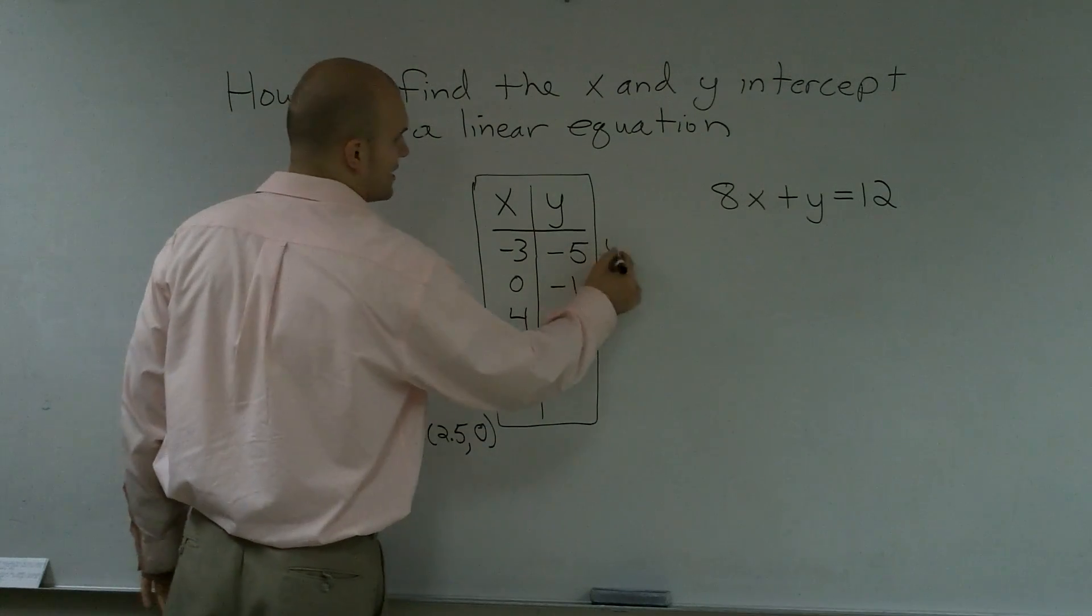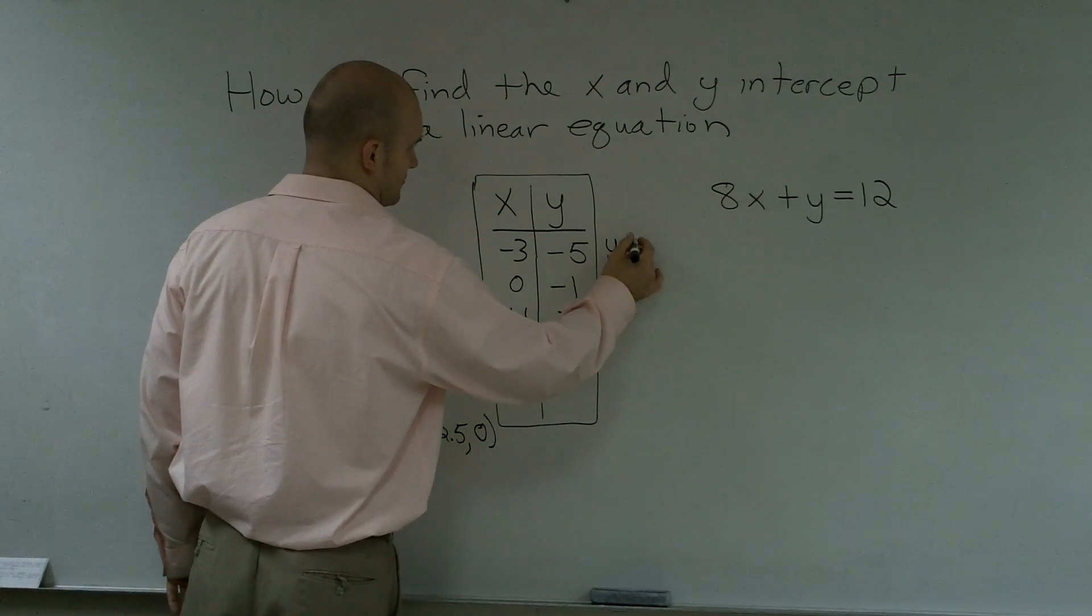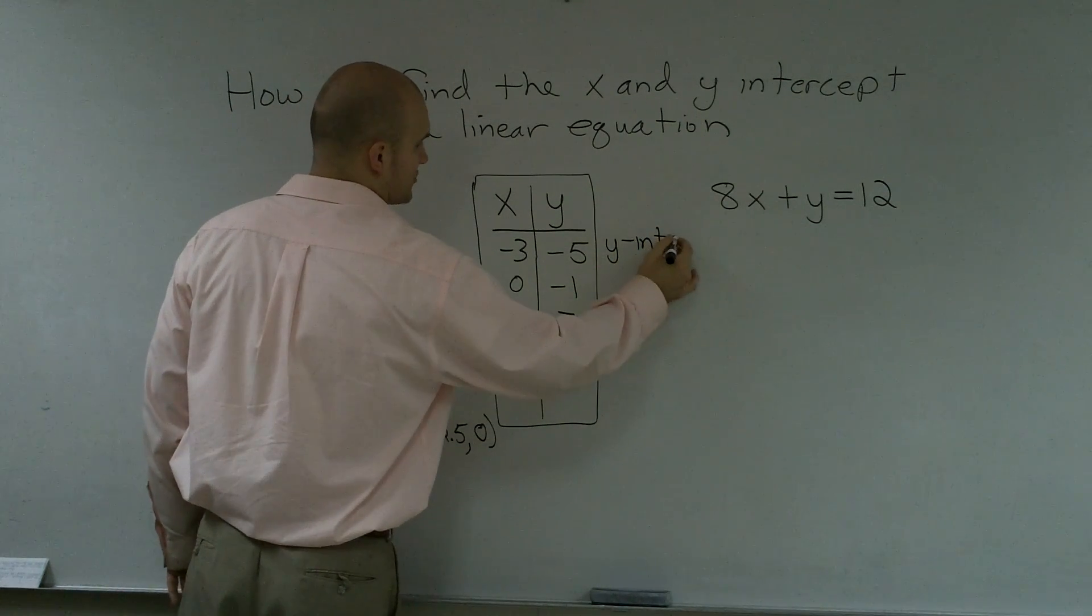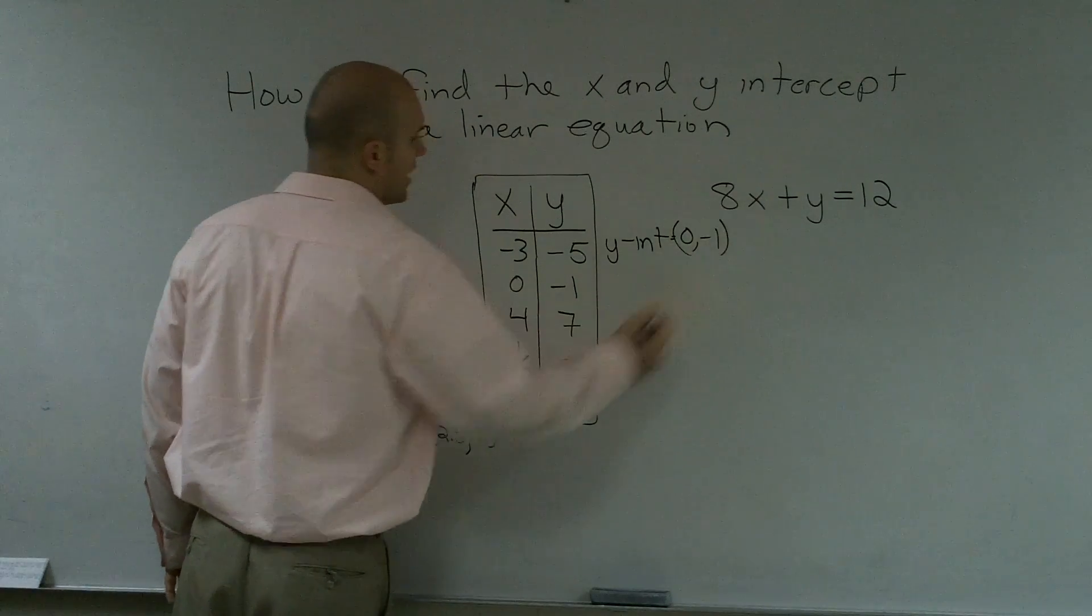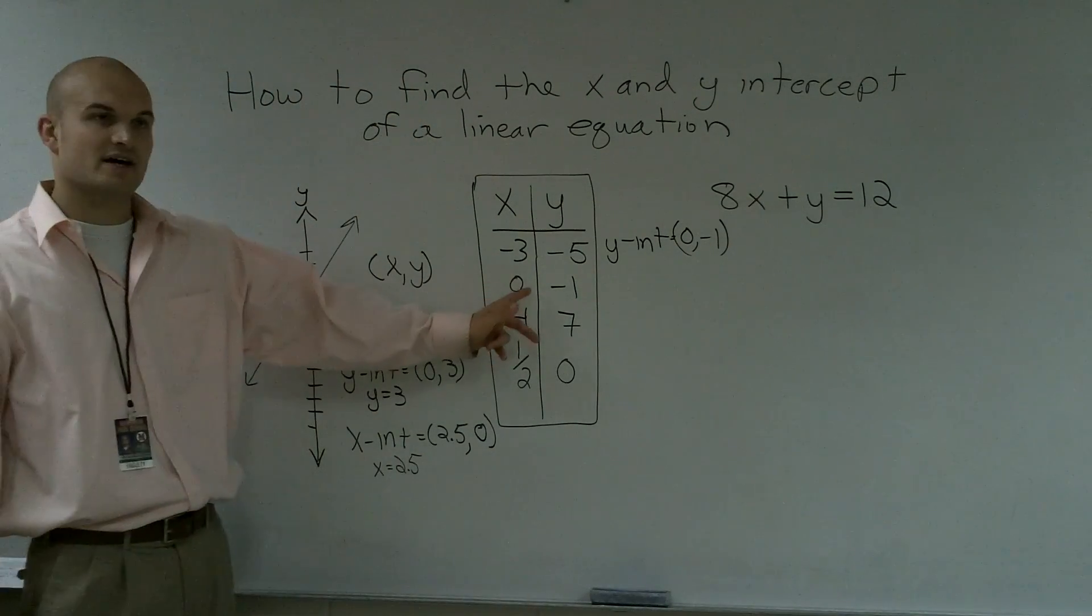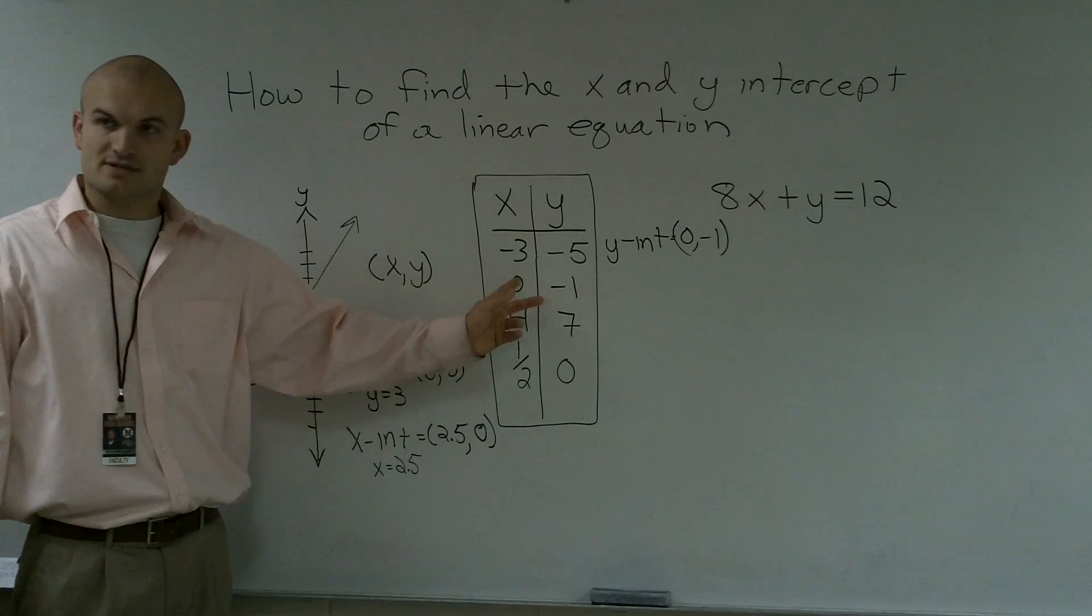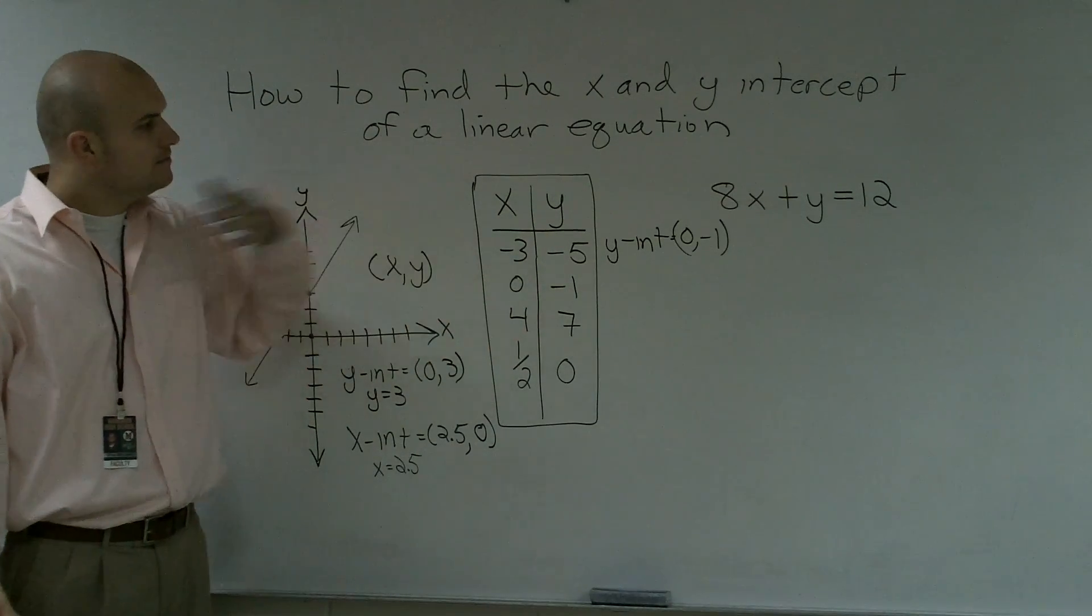So therefore my y-intercept is y equals negative 1. So for here, I have to say y-intercept is going to be at 0, negative 1. Why do I know that? Because I know my x value is 0 at my y-intercept. So therefore, that's it.